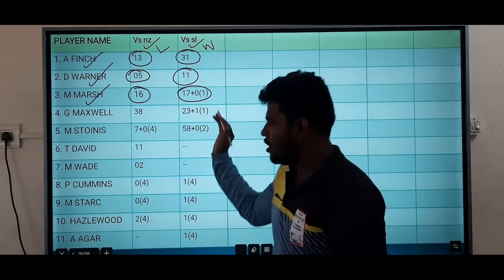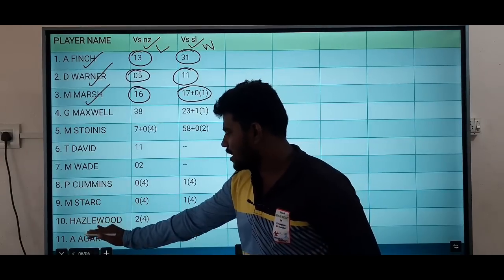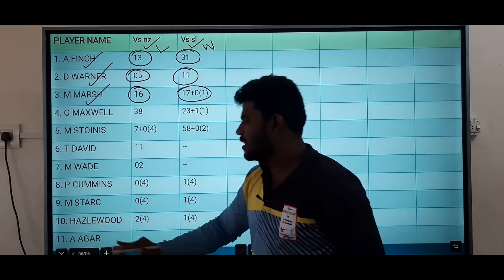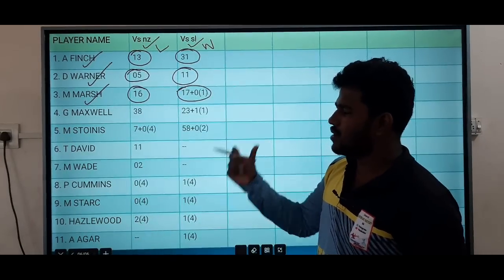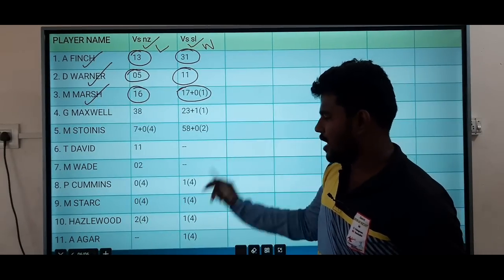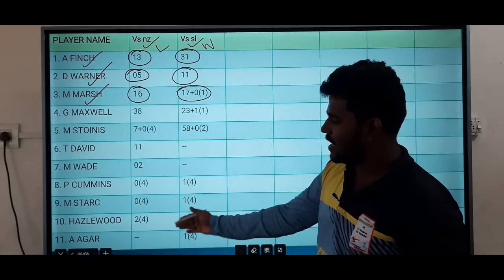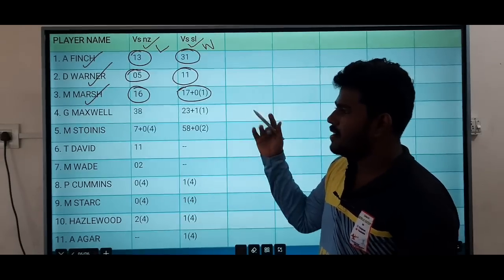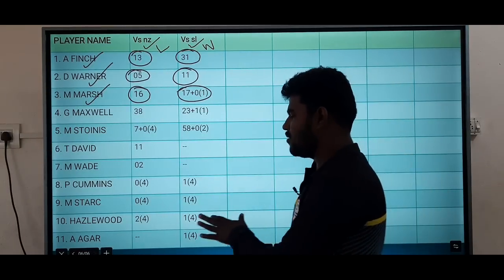Australia have four bowling options: Starc, Hazlewood, and Agar. There are no COVID issues to worry about. If there are no negative test results, all four bowling options are available.